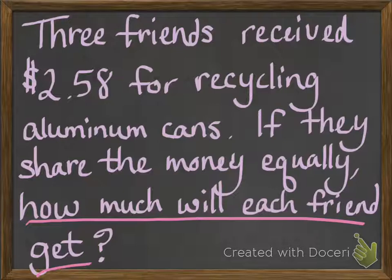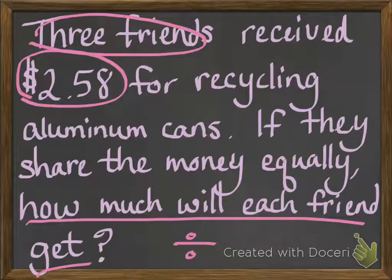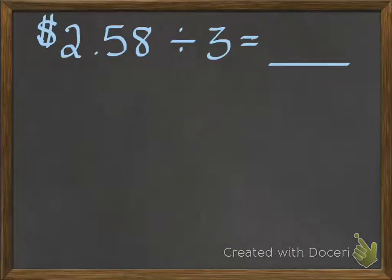If there were three of them and they're sharing it equally, how much should one friend get? I know that to find that answer, I'm going to have to use division. The important information I have is that there are three friends and that they are dividing $2.58 between them. So if I were going to write that as an equation, it would look like this: $2.58 divided by three equals — and that's what I'm going to try to find out.